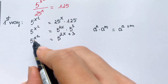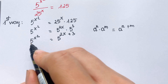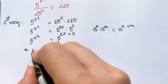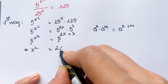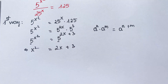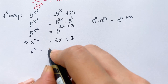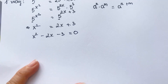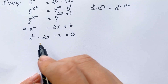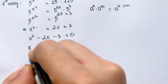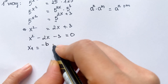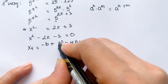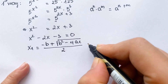Now everyone can see that for each side of the equation, we have the same base. Therefore, the exponents are equal: x squared equals 2x plus 3. This gives us x squared minus 2x minus 3 equals 0. We have two values of x using the quadratic formula: x1 equals minus b plus square root of b squared minus 4ac, all over 2.